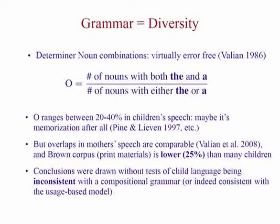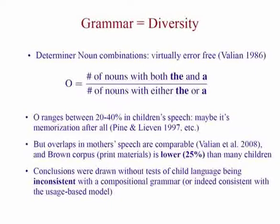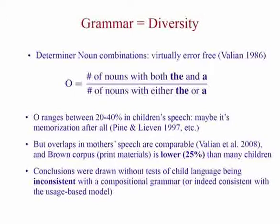This has led usage-based researchers to conclude that maybe early child language isn't productive — it's a matter of stored noun-determiner pairs that are simply retrieved. But a similar metric applied to mothers' language by Mintz and colleagues showed that children and mothers don't actually differ in their amount of determiner overlap. In fact, broad purpose texts have a lower measure of diversity than two-year-olds. The conclusion would have to be that two-year-olds are more syntactically advanced than professionals, which seems absurd. We can only draw conclusions about child language if data is shown to be inconsistent with what a grammar model would predict.